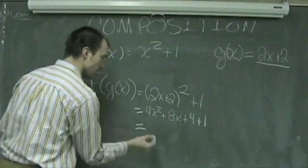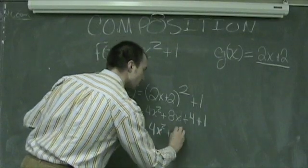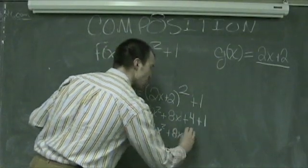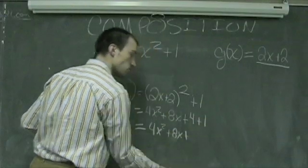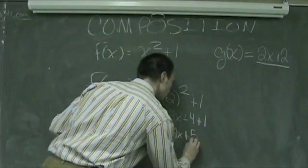This is finally equal to 4x squared, plus 8 times x, plus 4, plus 1. I can combine common terms, or plus 5.